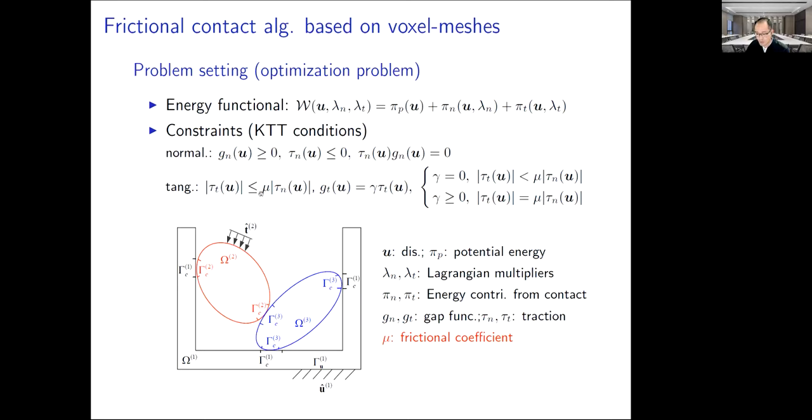In the tangential direction, we adopt the Coulomb friction law. If there is a slip between the two bodies, the tangential gap G_t is not zero, and the tangential stress or shear stress is proportional to the normal stress, and the direction is determined by the tangential gap.